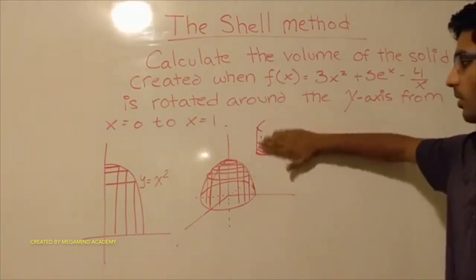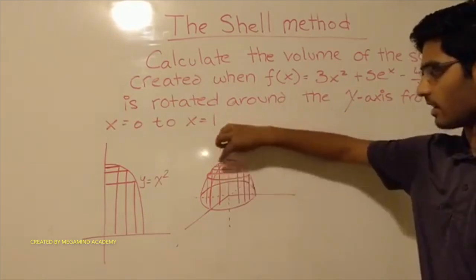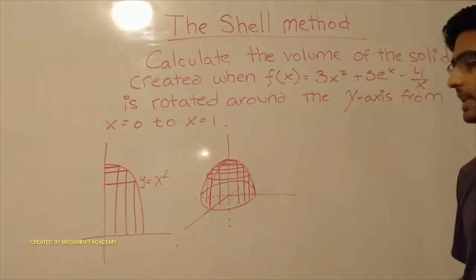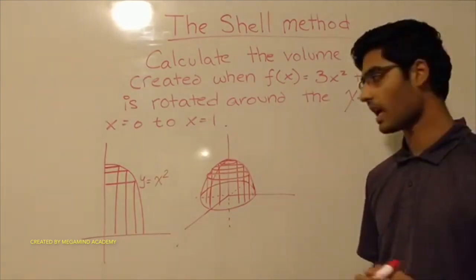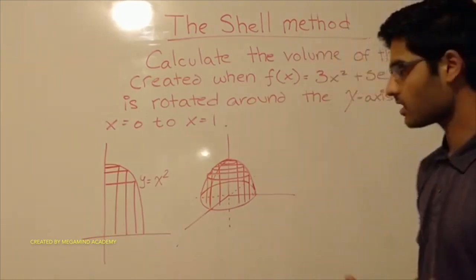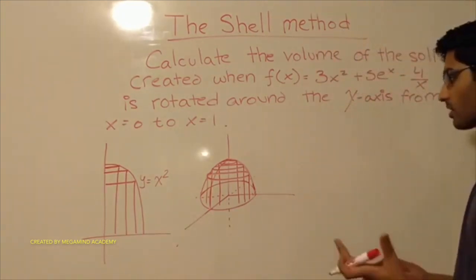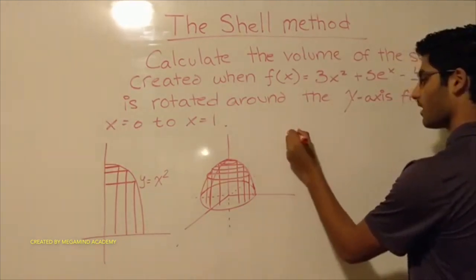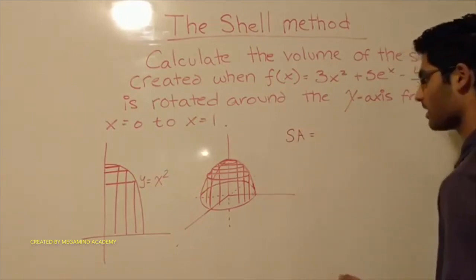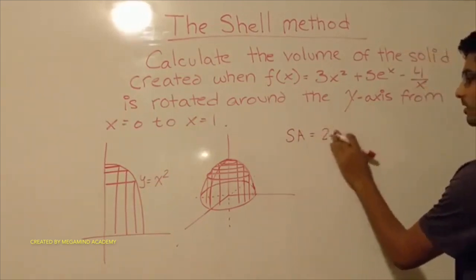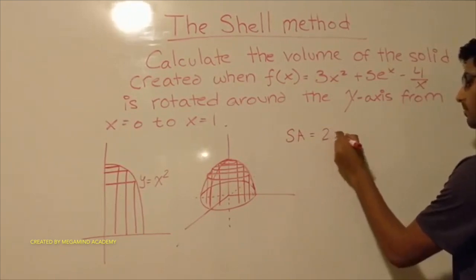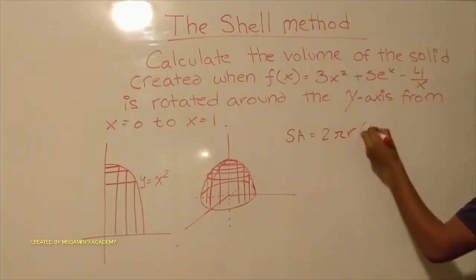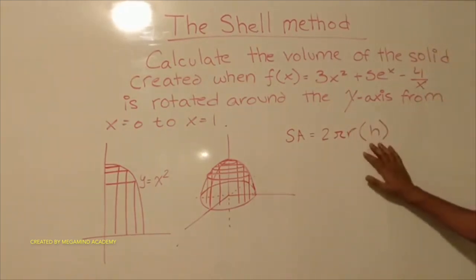What we want to do is create an infinite number of cylinders underneath this shape and calculate their surface areas — the ones that run up and down — and add them together. Let's look at the formula for the lateral surface area of a cylinder: it is 2πr, which is the circumference of the base, times the height.